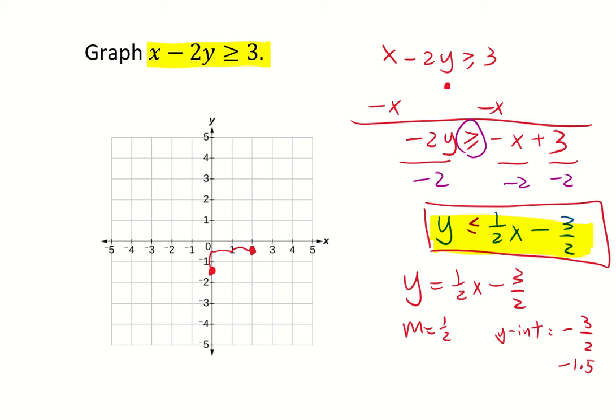Now we're going to connect the two points with a solid line because we do have the equal sign here. So connect the two points with a solid line. Then we'll decide which side to shade. We'll look at this equation. It's less than or equal to so we're going to shade below. So that is our graph.